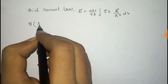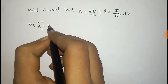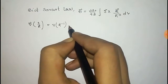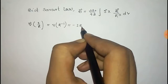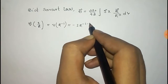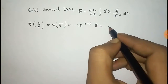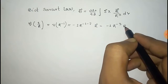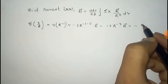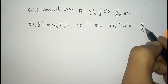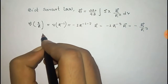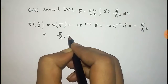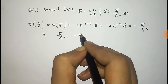We can write that the gradient of 1/r is equal to the gradient of r to the power minus one, which equals minus r to the power minus two times r-vector. This is by the formula that gradient of r^n equals n·r^(n−2)·r-vector, so it gives minus r-vector by r-cubed.